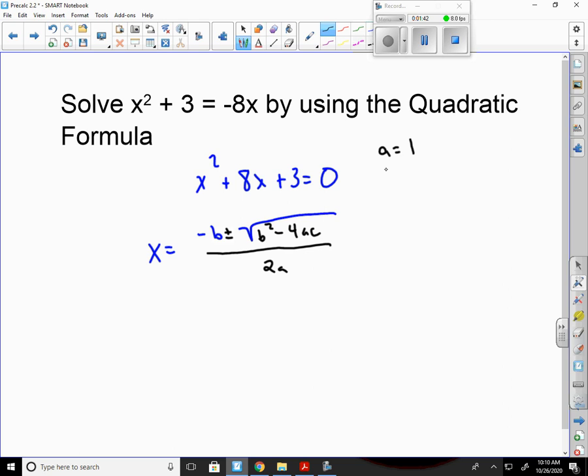Here, my a is 1, my b is 8, and my c is 3. Nothing in front of the x squared, so it's 1, b is 8, c is 3. Now, I'm just plugging these values in everywhere I see their letter. Negative 8 plus or minus the square root of 8 squared minus 4 times 1 times 3 all over 2 times 1.